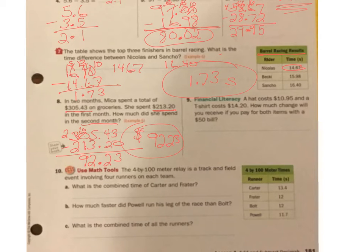This one's a cool one. Number 9. A hat costs $10.95, T-shirt costs $14.20. How much change will you receive if you pay for both items with a $50 bill? So first of all, I need to know what both items together cost. So $14.20 plus $10.95. This is going to be my total bill. 0 plus 5 is 5. 9 plus 2 is 11. 1 plus 4 is 5 plus 0 is 5. My decimals, I forgot to drop them down. And then 1 plus 1 is 2. So together, they cost $25.15.